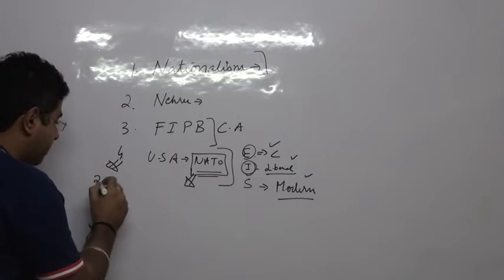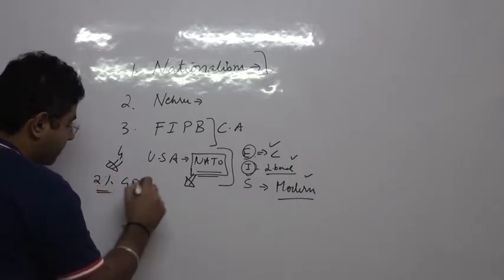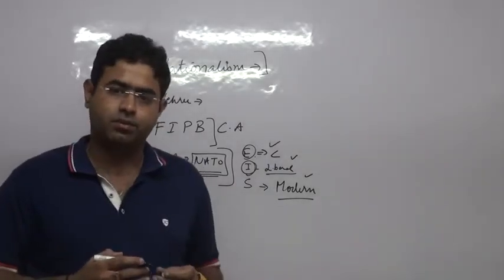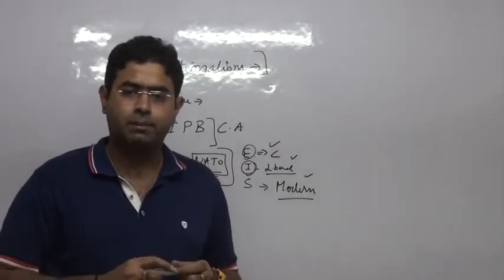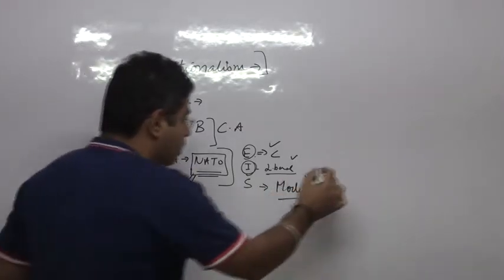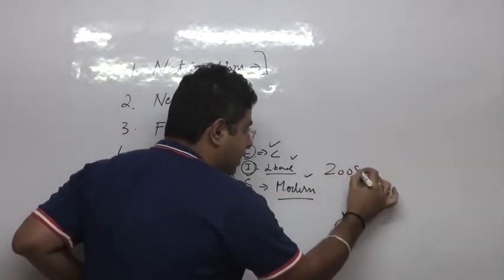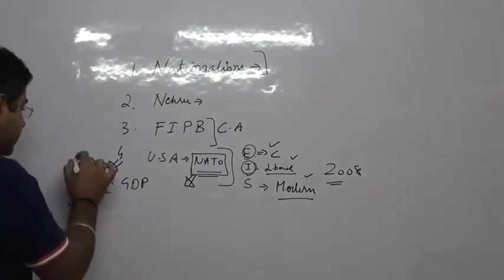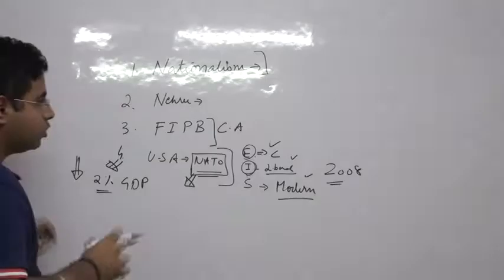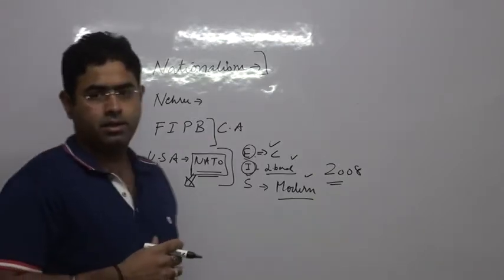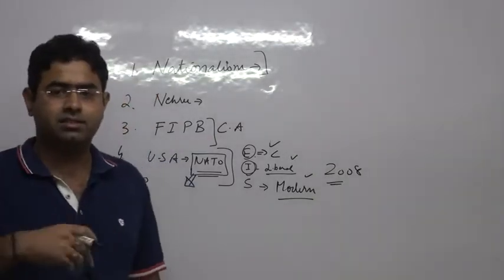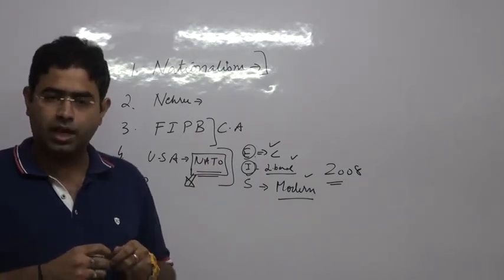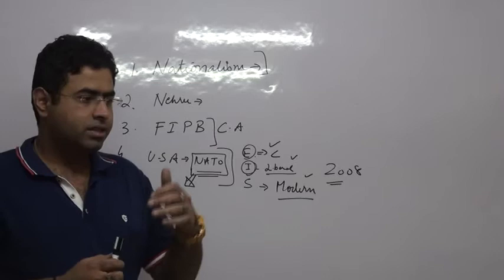Every country who is a participant of NATO should be paying two percent of their GDP, and the rest should be paid by United States of America. But now United States, because of the economic downturn since 2008, is feeling the pinch. Now it wants that it should not be solely financing NATO forces; rather, European countries should also contribute.